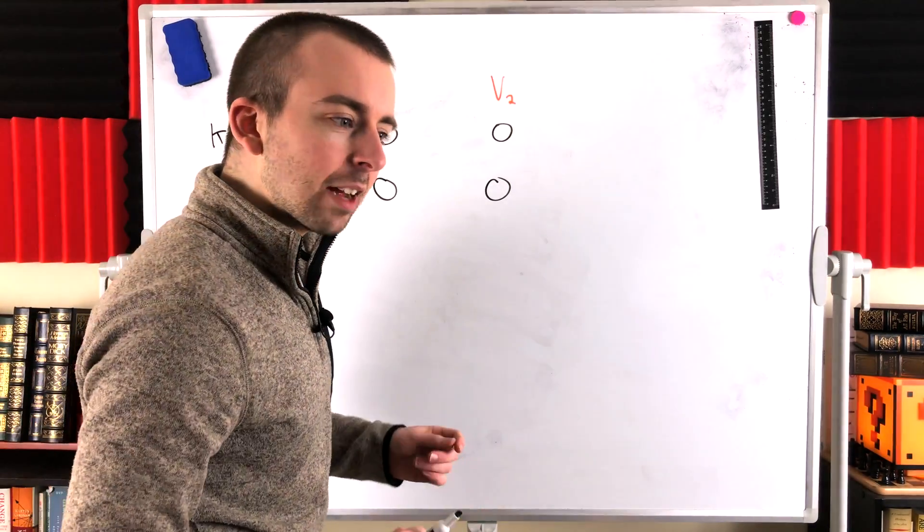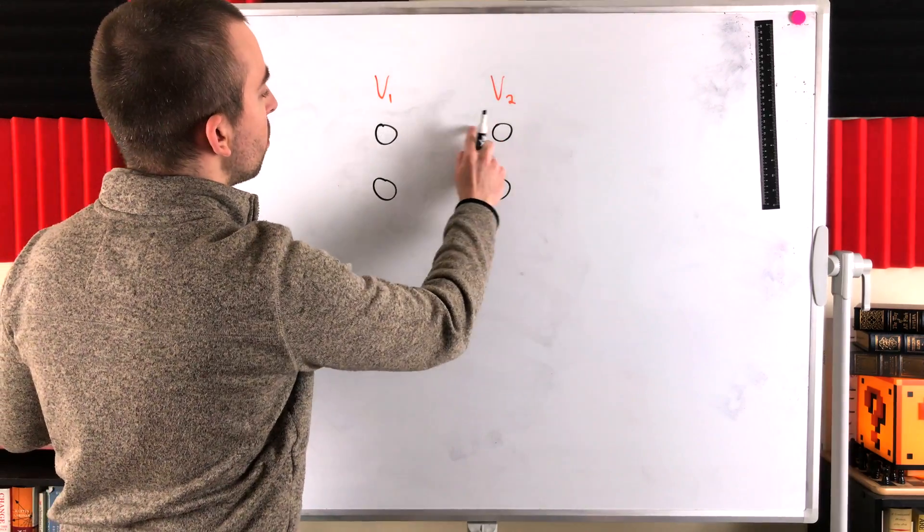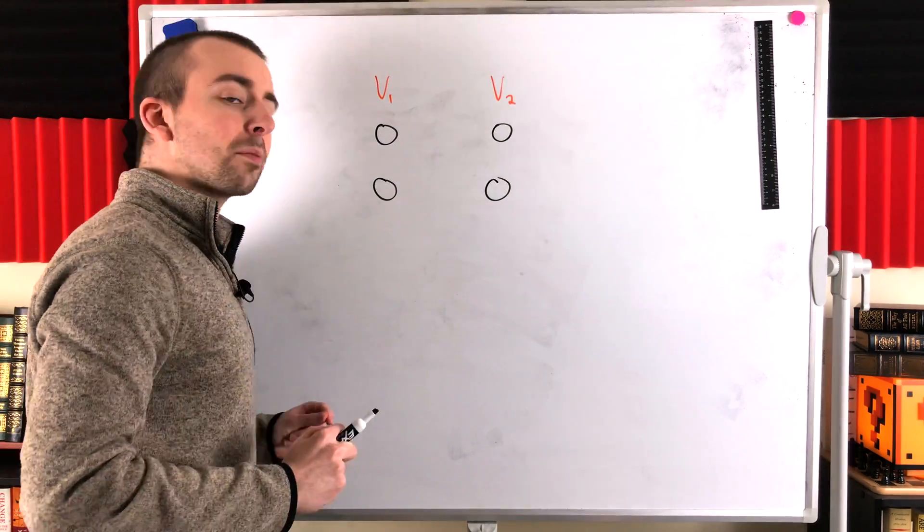Well, you might think no, because it doesn't have every edge that it needs to. Two edges here, two edges here. So it's not a complete bipartite graph.